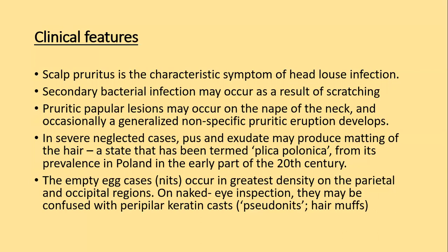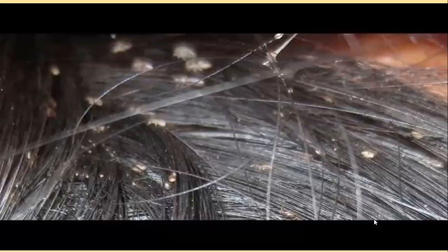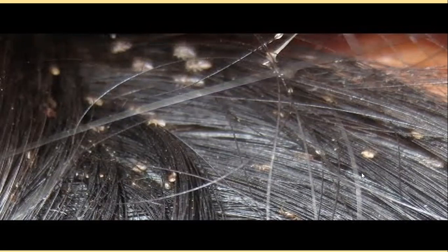The empty egg cases or nits occur in greatest density on the parietal and occipital regions, and on naked eye examination may be confused with peripilar keratin cysts. The difference on microscopy is that the peripilar keratin cyst surrounds the hair shaft, while nits are attached to one side of the hair shaft. This picture shows several lice along with the nits attached to the hair.